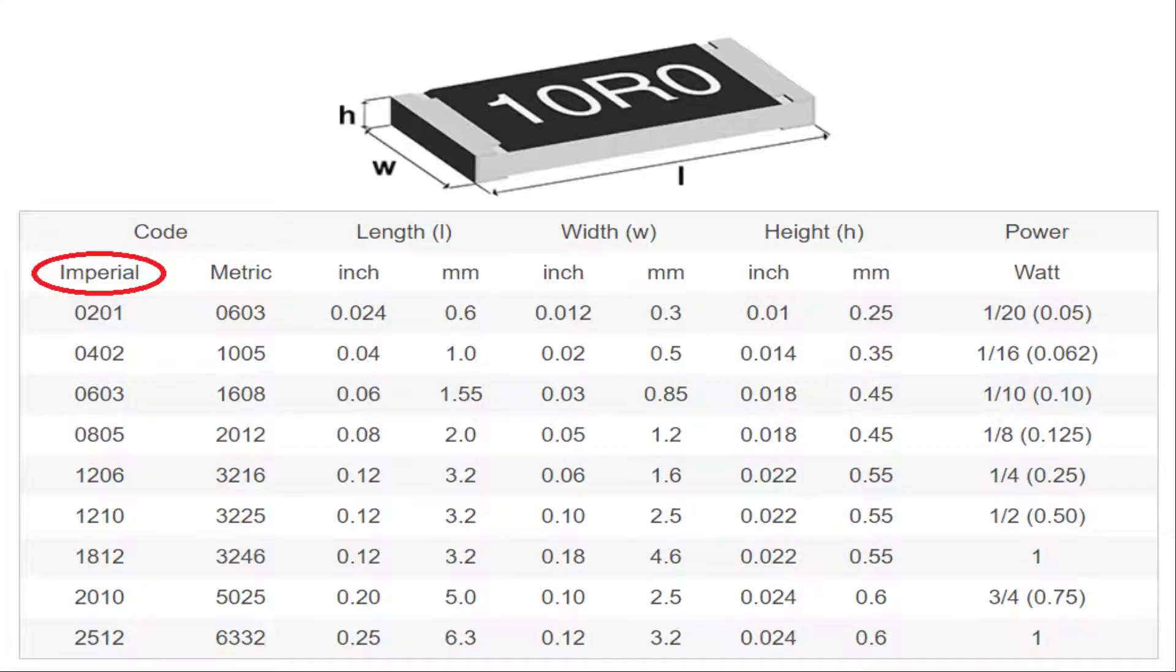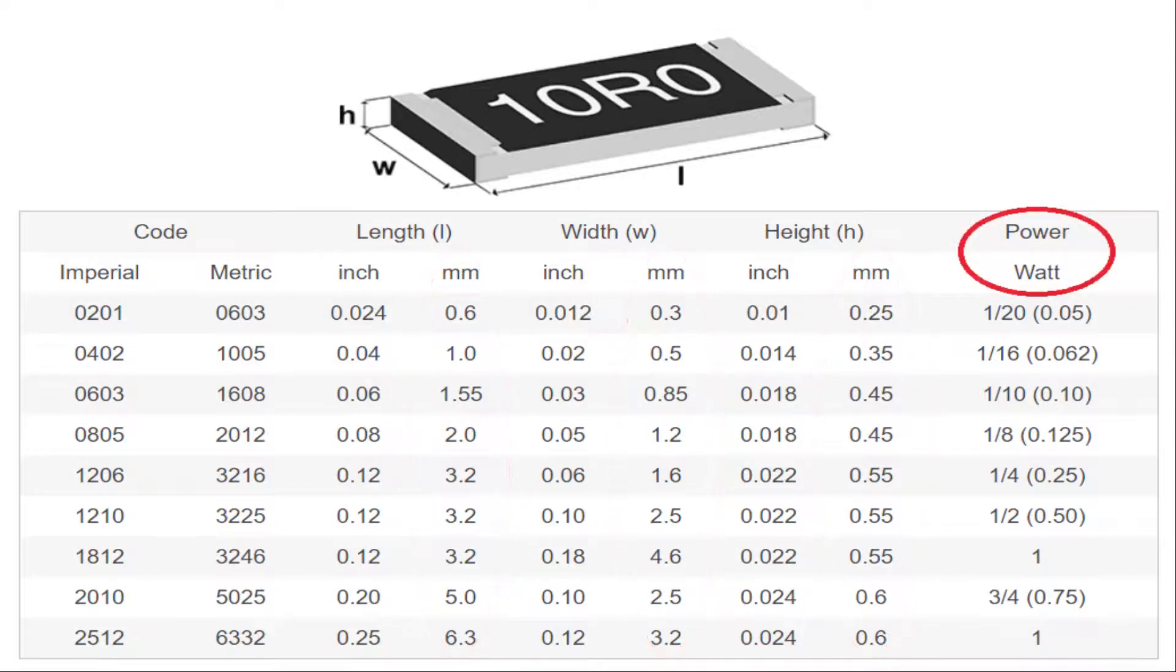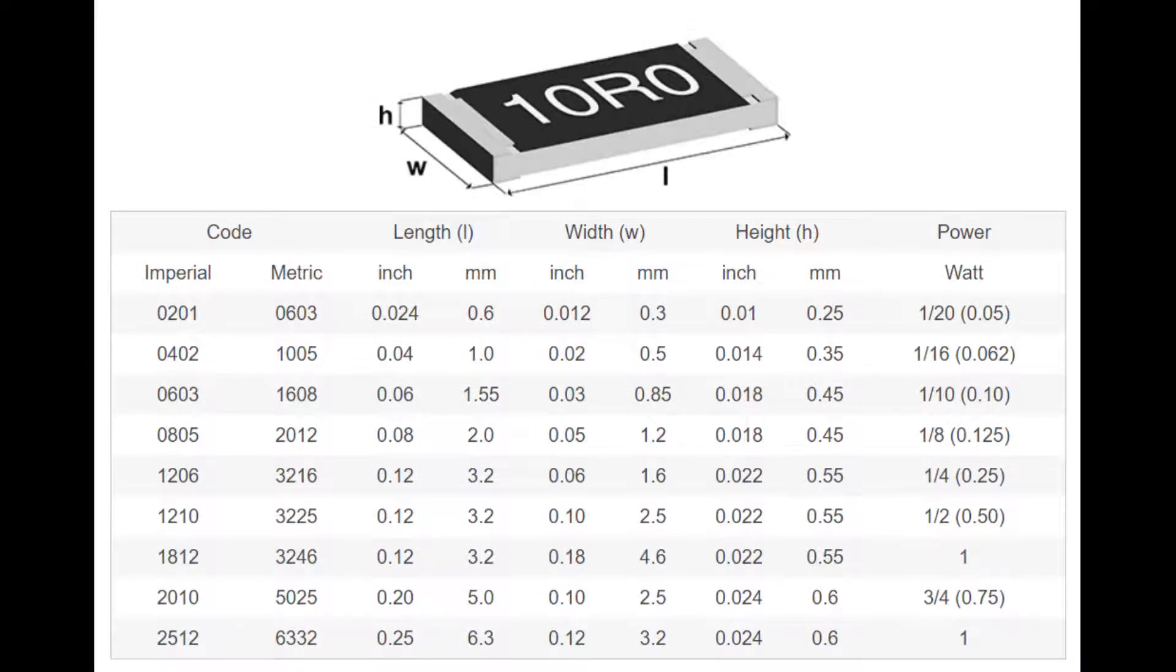The SMD resistor size depends mainly on the required power rating. The following table lists the dimensions and specifications of commonly used surface mount packages. You can see and analyze each package code and its corresponding dimensions of length, width, and height. The common packages used in electronics PCB designing are 0201, 0402, 0603, 0805, 1206, 1210, 1812, 2010, and 2512.